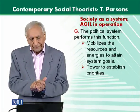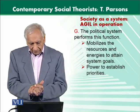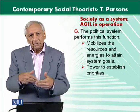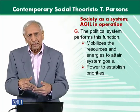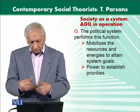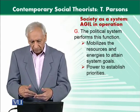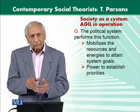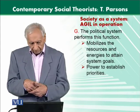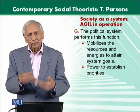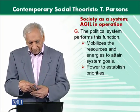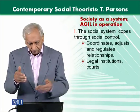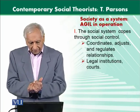The second function is Goal Attainment — the political system performs this function. Some decision-making has to be made with respect to the mobilization of resources and energies to attain those goals. So who has the power to take these decisions and then to establish the priorities?